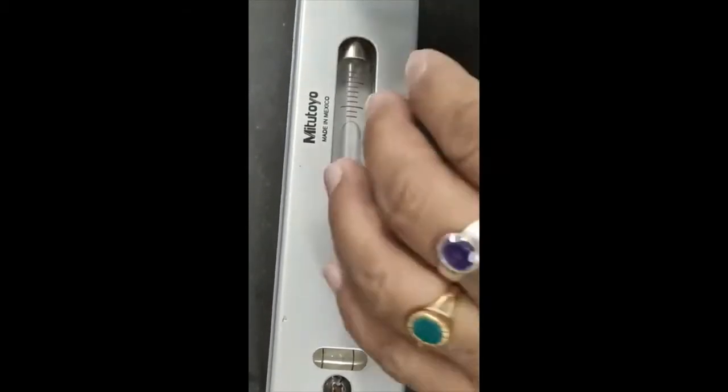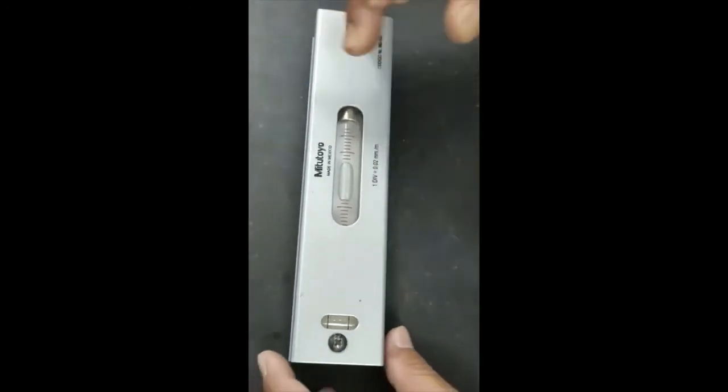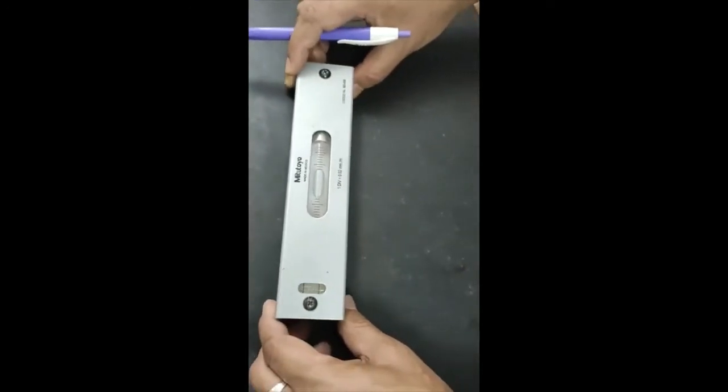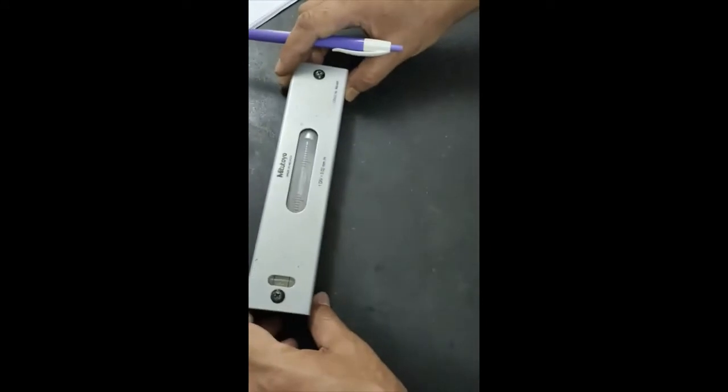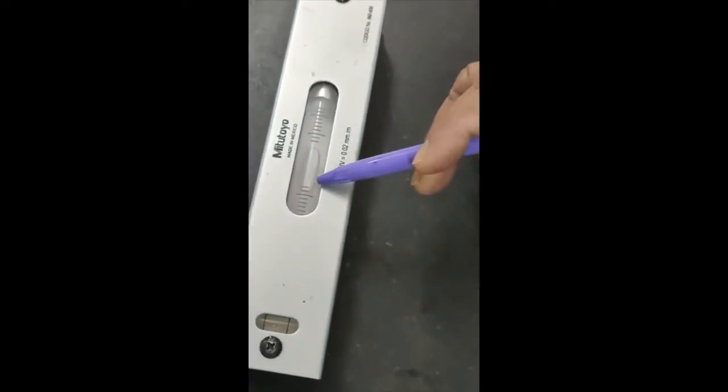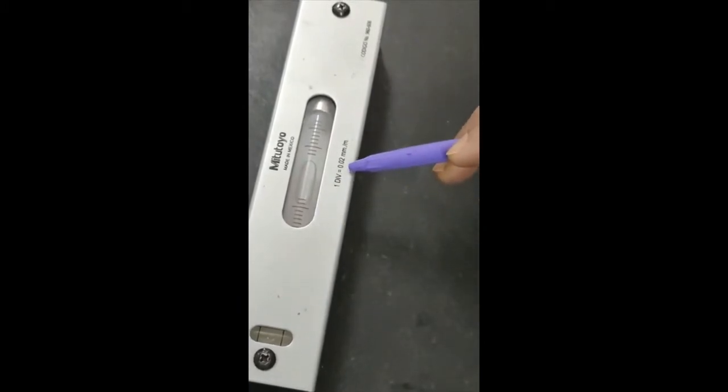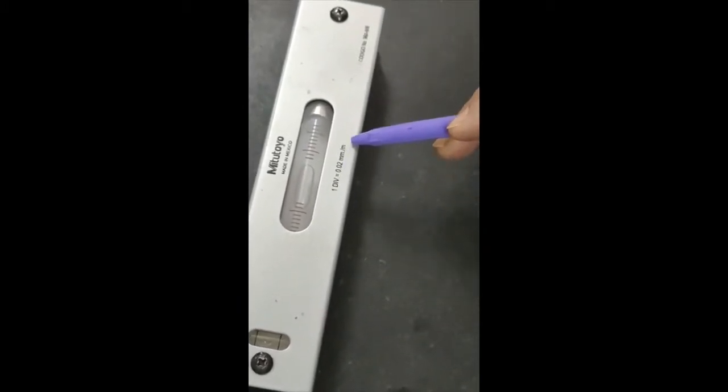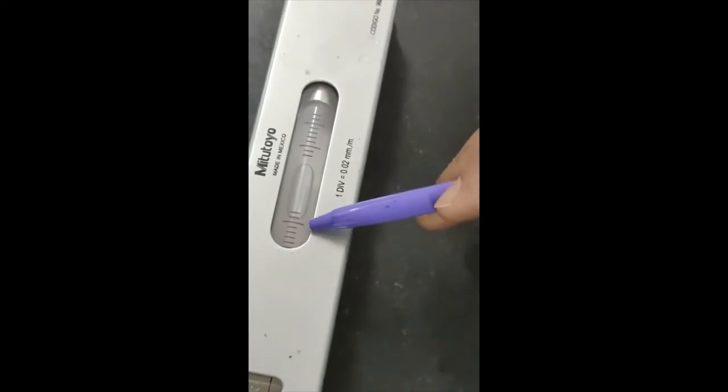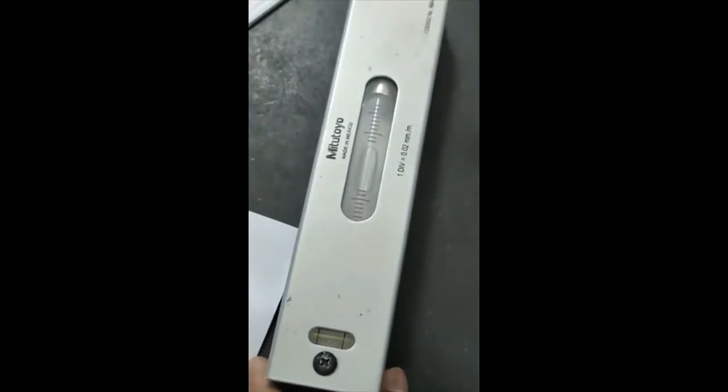If you displace it to different levels, suppose this position is my zero, and after this you can displace it to check its elevation. Now it is coming two divisions. One division means 0.02 millimeter per meter inclination, so two divisions means two into 0.02 inclination.